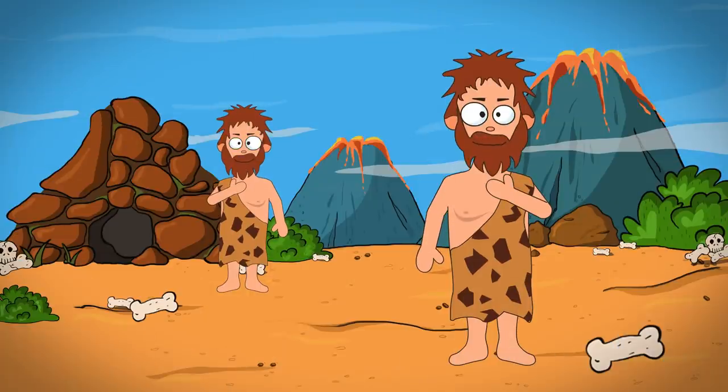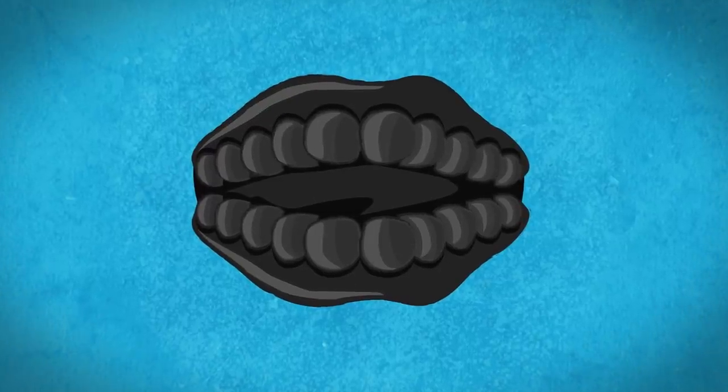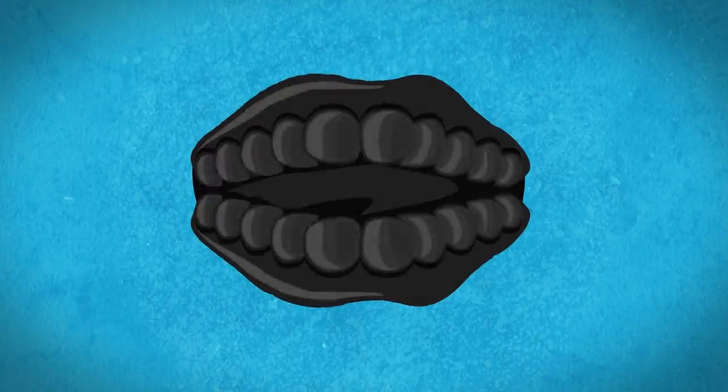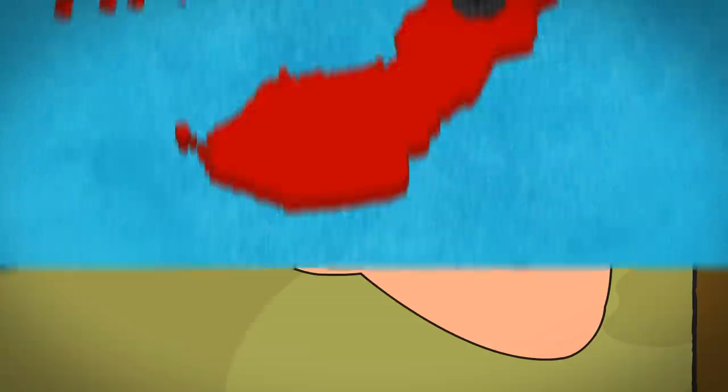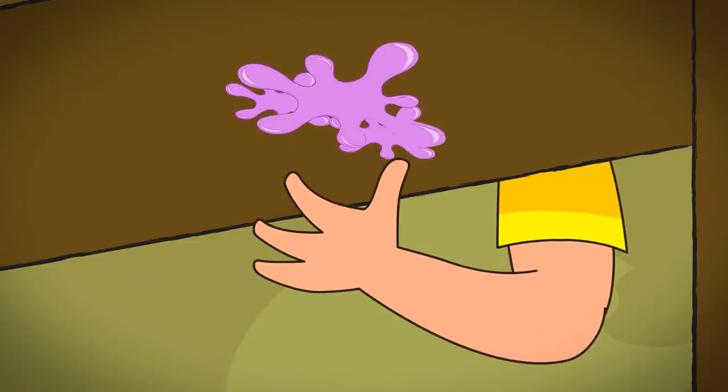Older than you think, chewing gum dates all the way back to the Neolithic period. We know this because tooth imprints have been found in gum made from birchbark tar in Finland, probably under the world's oldest desk.